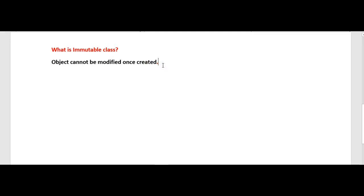Any modification on an immutable object should result in a new object. If you are trying to modify an object of an immutable class, it should create a new object rather than modifying the existing object.